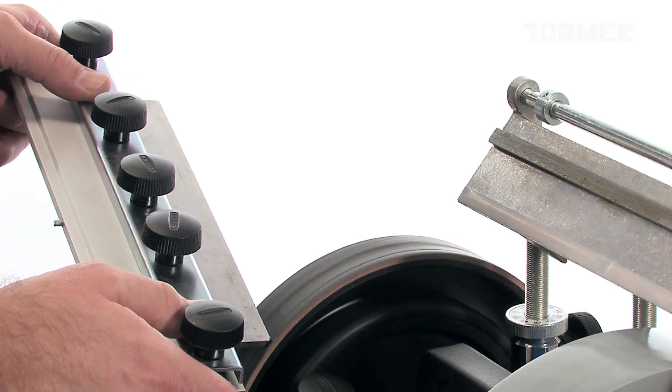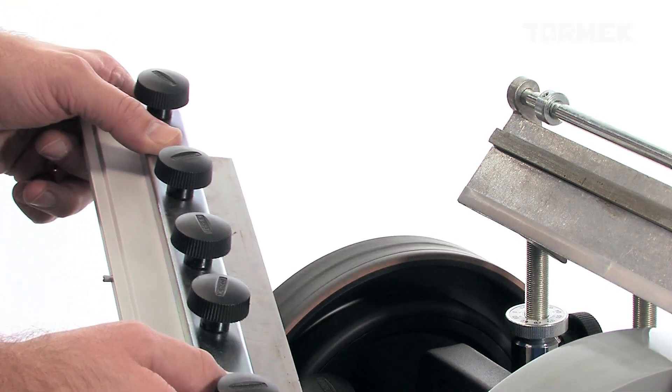You finish by removing the burr and polishing the bevel on the leather honing wheel.